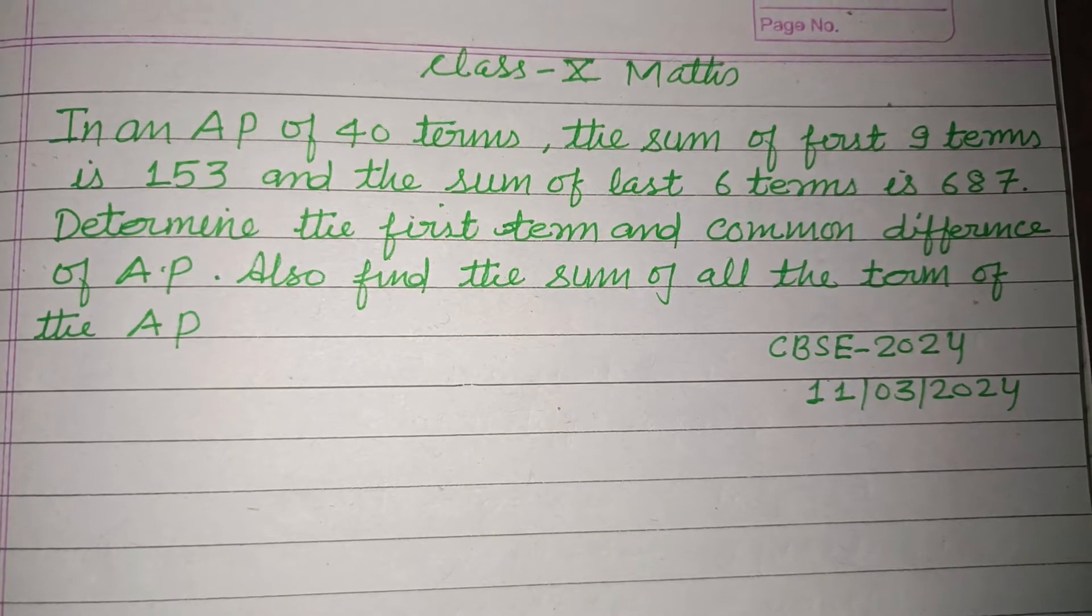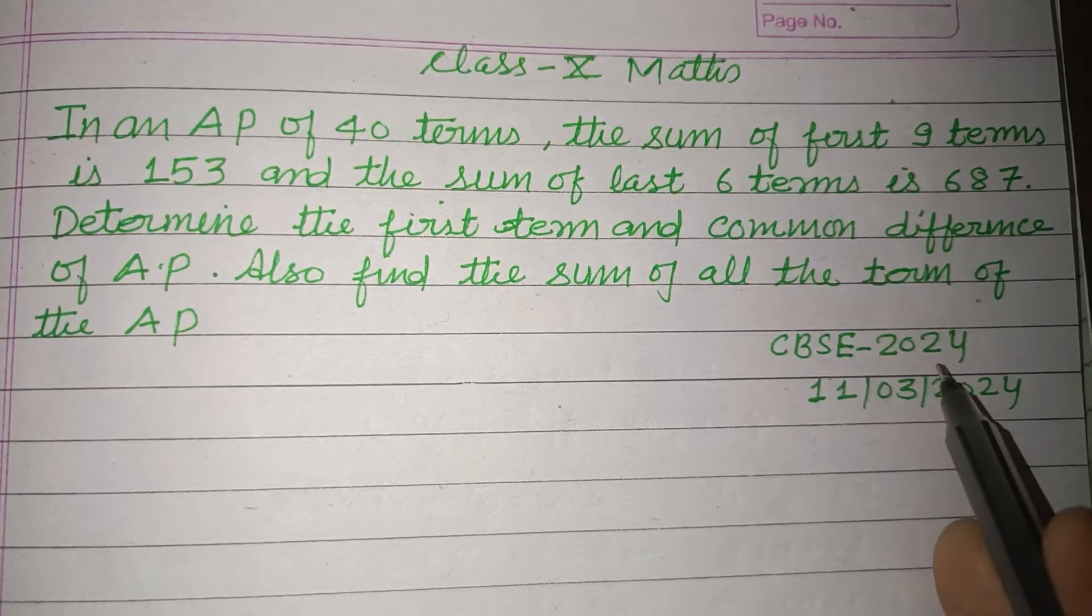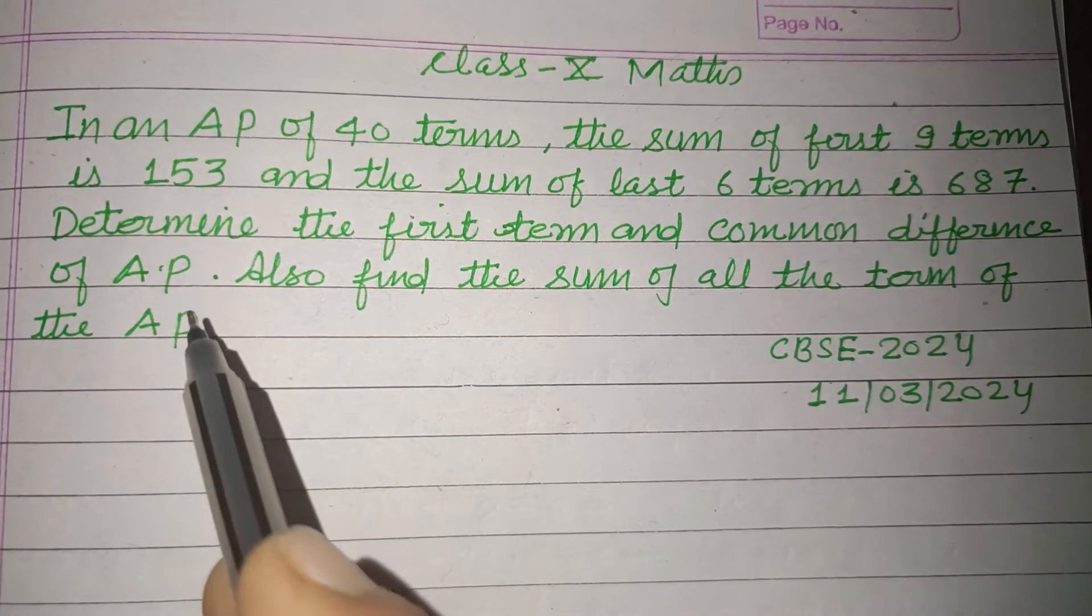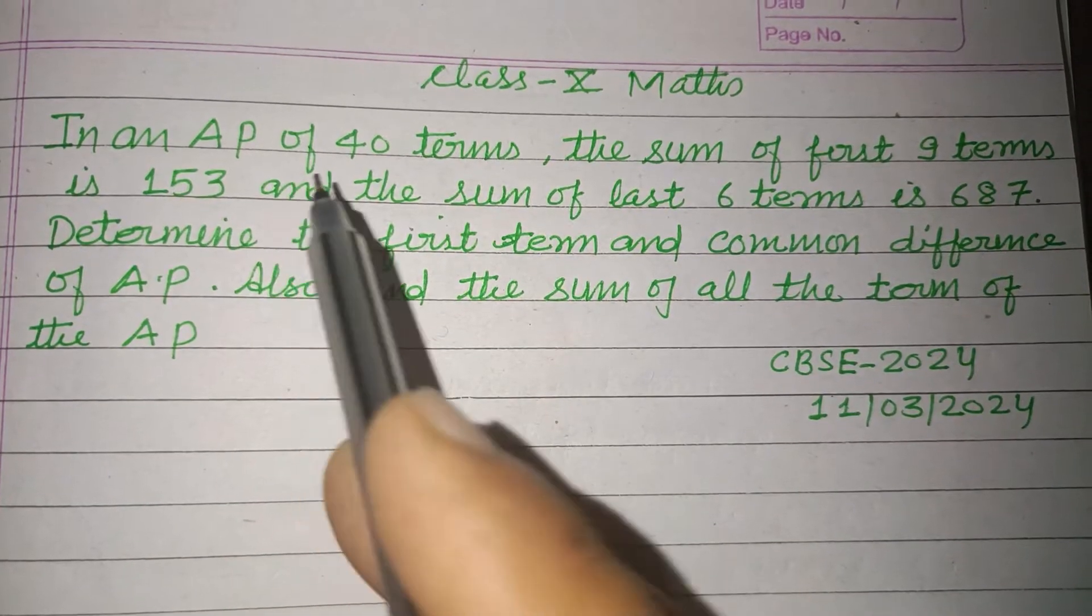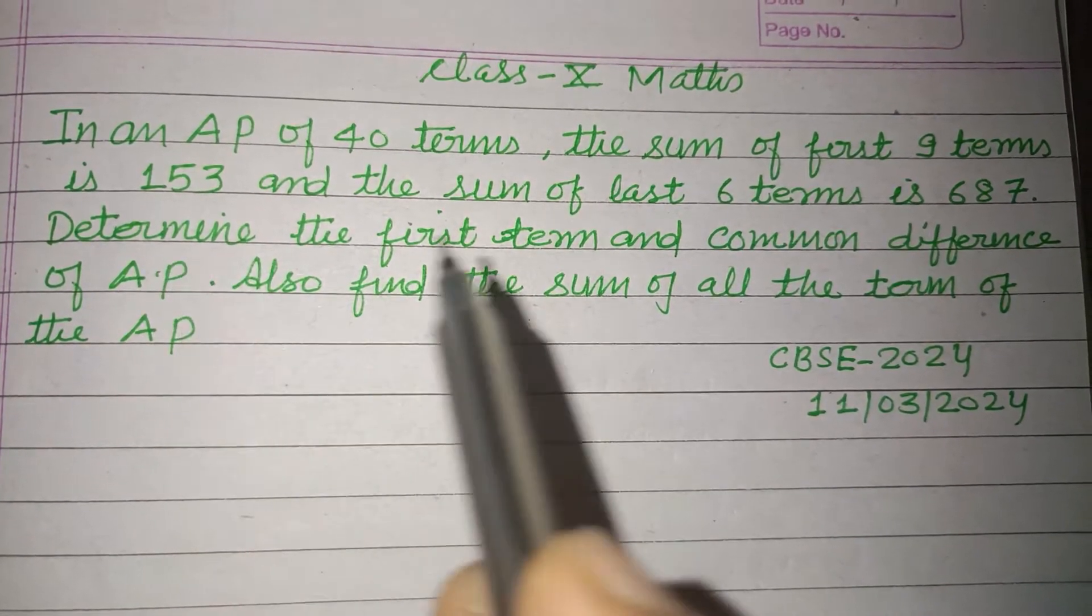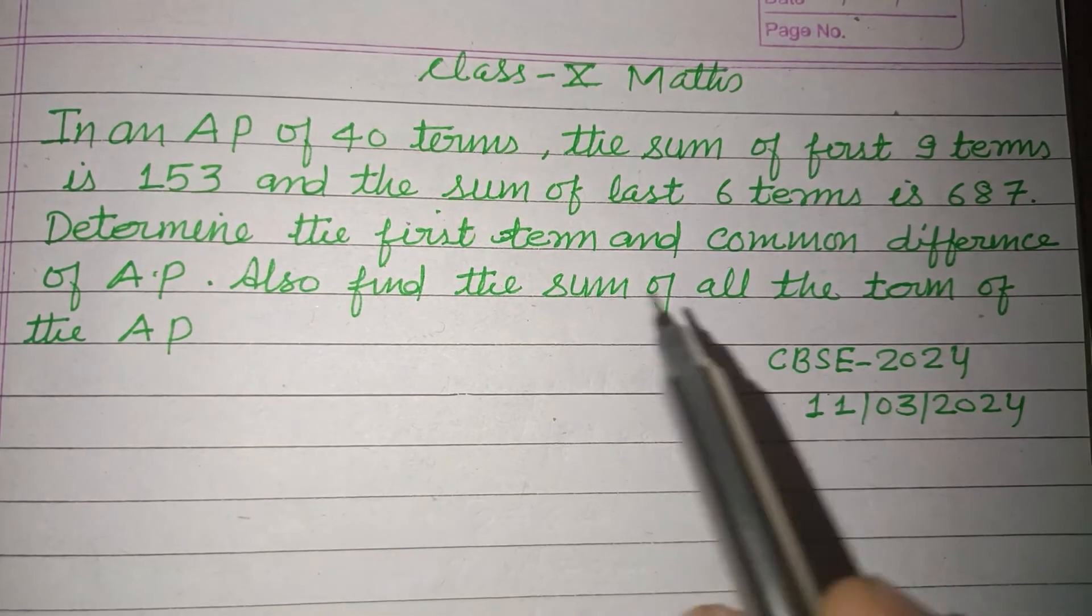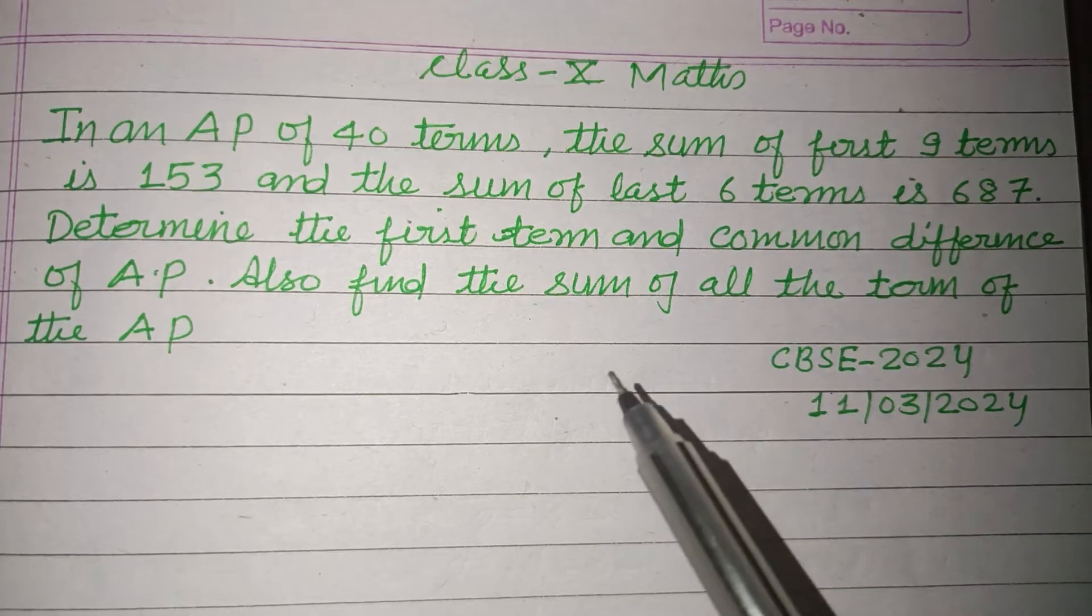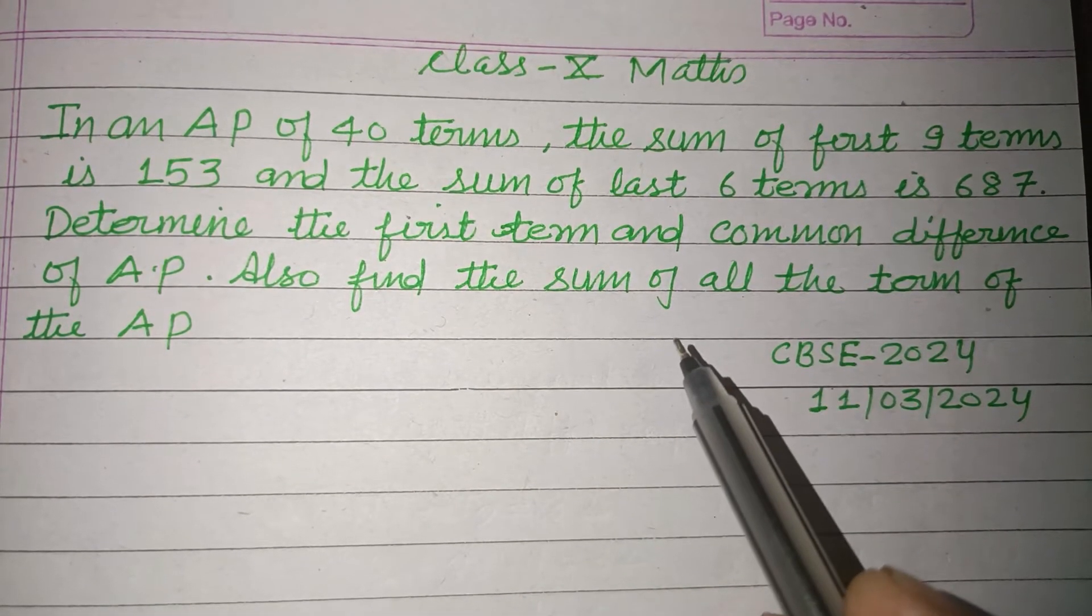Hello, I am very welcome to this YouTube channel. CBSC Board Exam 2024. Question from Arithmetic Progression. In an AP of 40 terms, the sum of first 9 terms is 153 and the sum of last 6 terms is 687. Determine the first term and common difference of AP and also find the sum of all the terms of the AP.